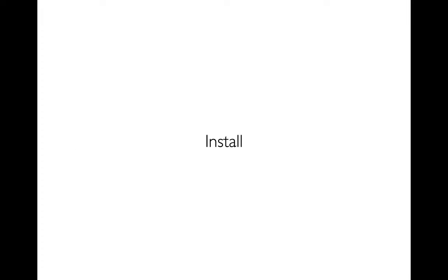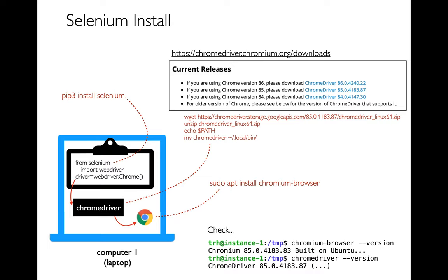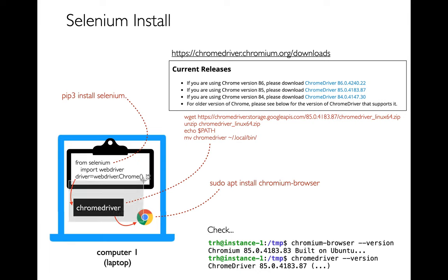The first thing we have to think about when we want to use Selenium is how to install it. There are three pieces: the easiest is just the Python module — you can say 'pip3 install selenium'. That uses the ChromeDriver, which in turn uses the web browser. The last step is also fairly simple: run 'sudo apt install chromium-browser'. The more complicated thing is actually installing ChromeDriver, because the ChromeDriver has to match versions with the web browser.